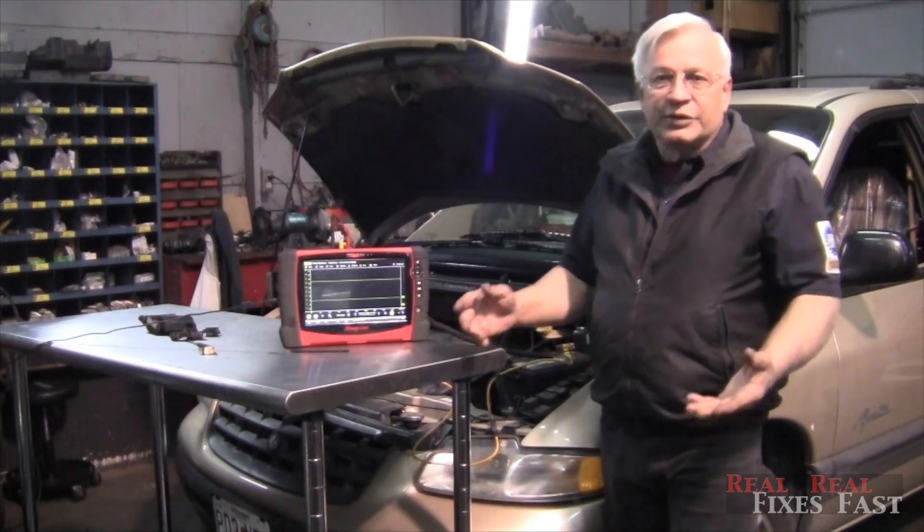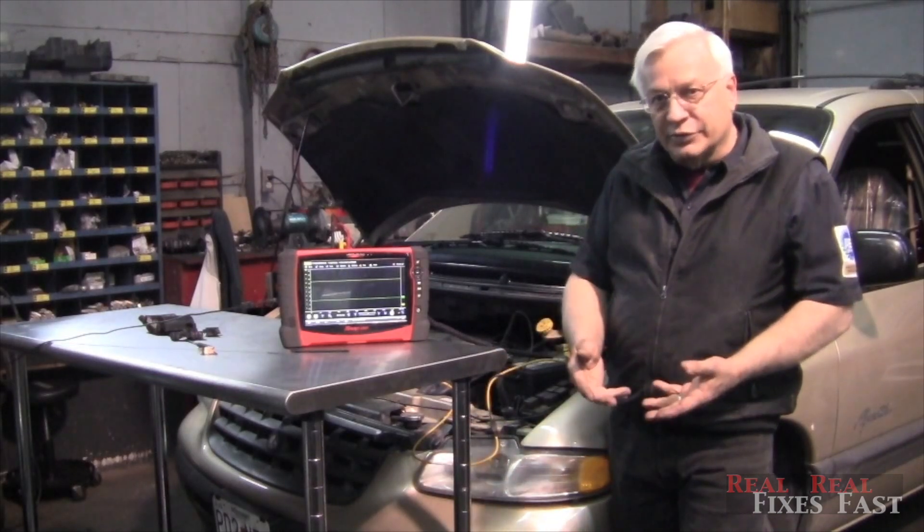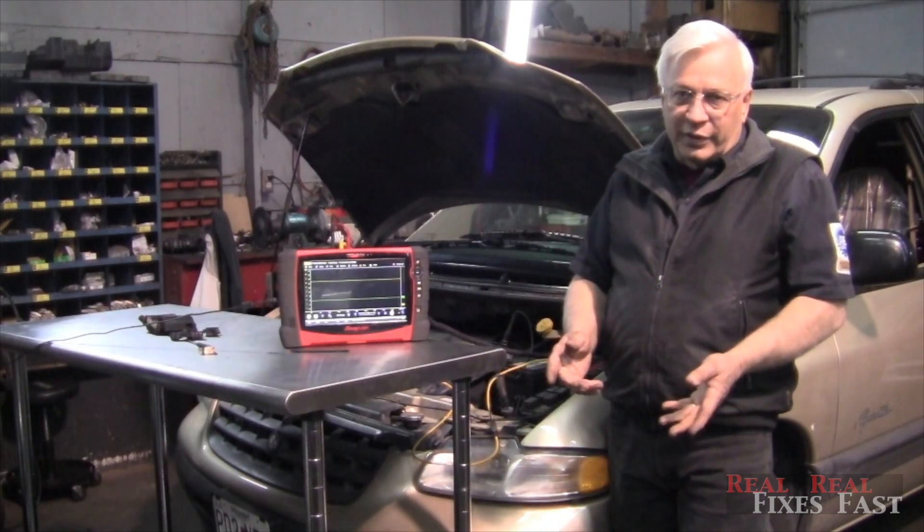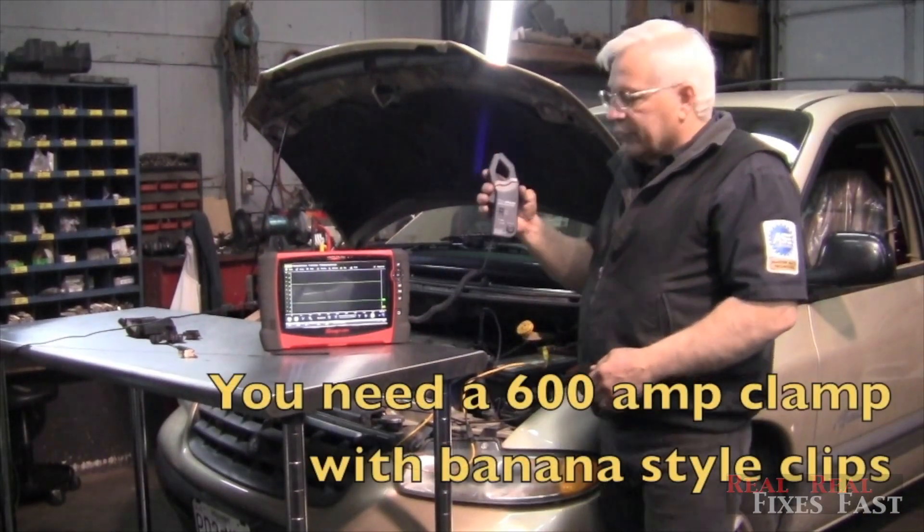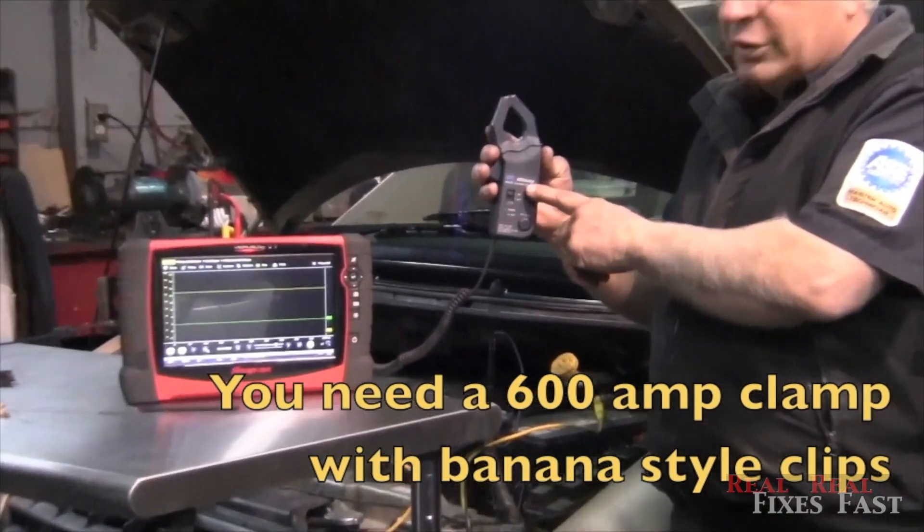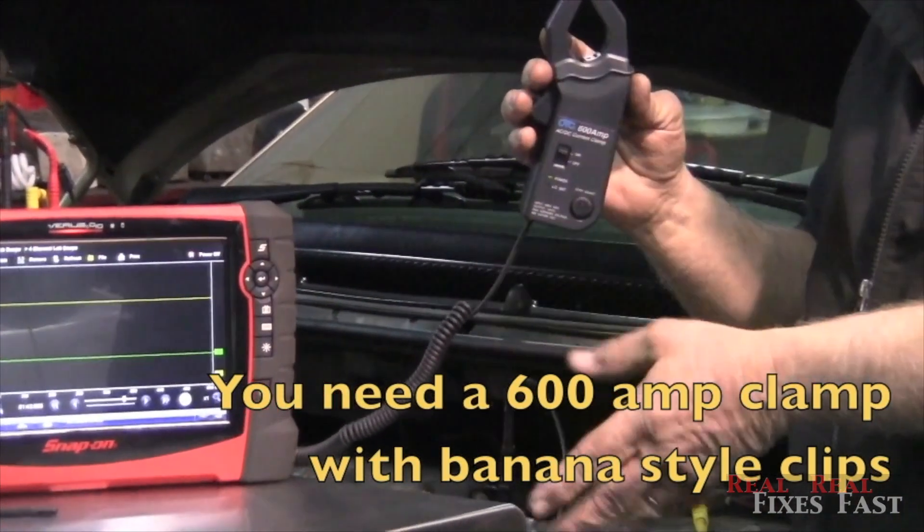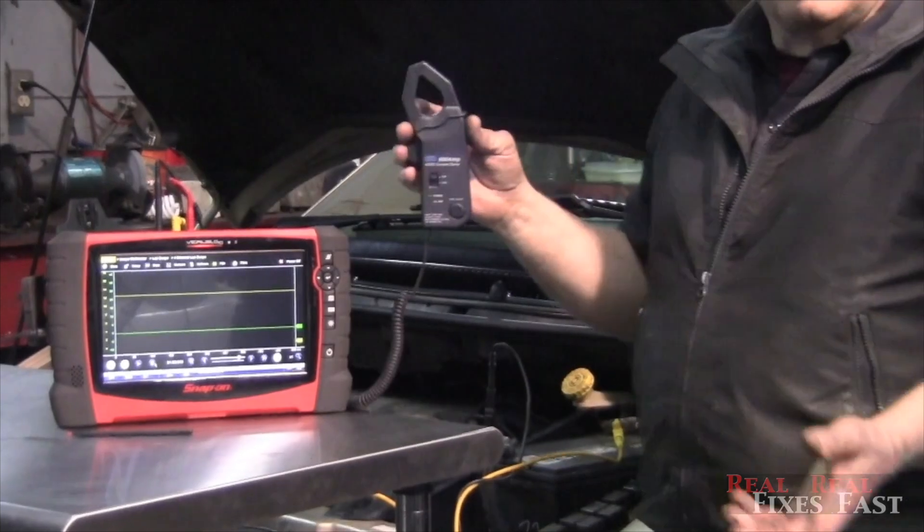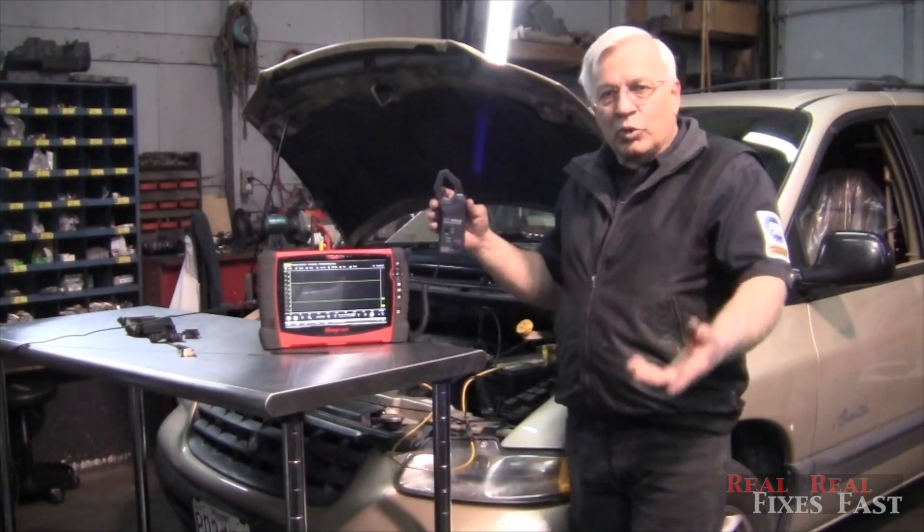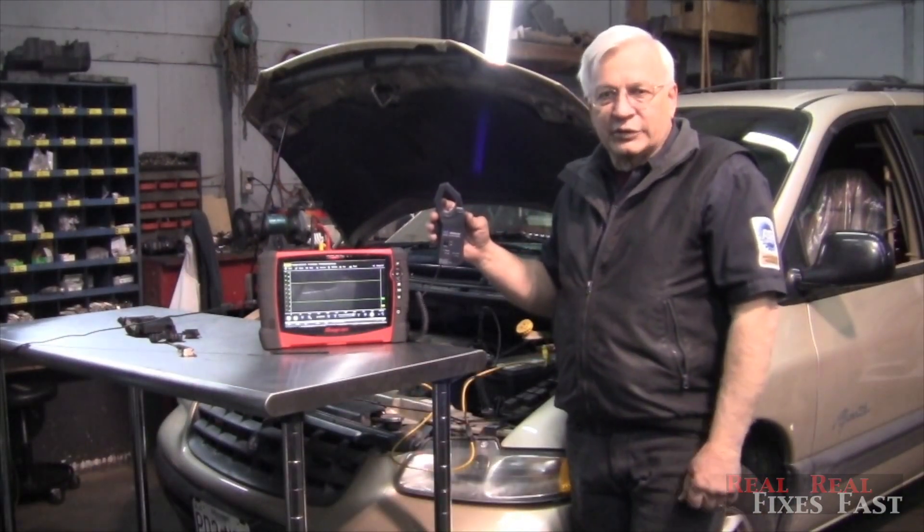Okay, once again this is a test to tell you how well or how healthy that starter is. Sometimes you can catch one about to fail. Now to do this test, you do have to have a high amp clamp, a 600 clamp, because the starter pulls many more amps than the low amp clamp can tolerate and report. So once again, with a two-channel lab scope, it's just one more tool in your arsenal for diagnostics.